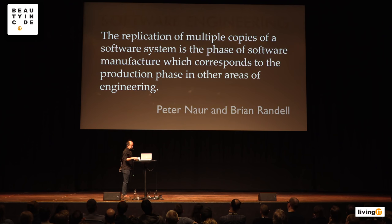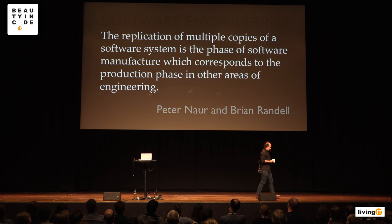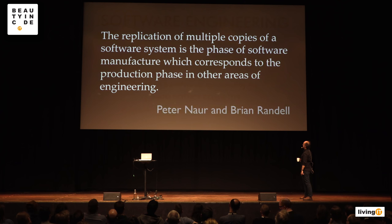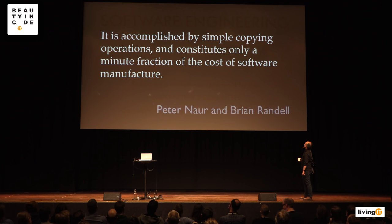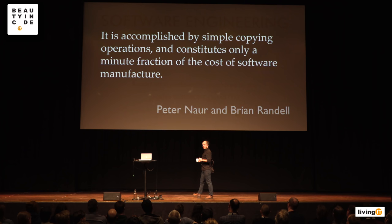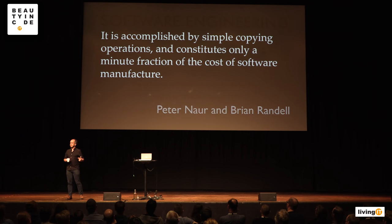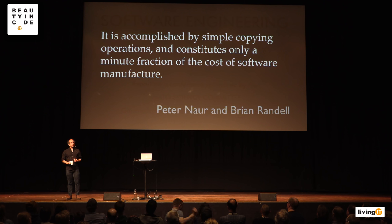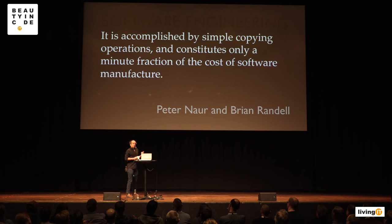Software is not like a manufacturing process. From the 1968 document: 'The replication of multiple copies of a software system is accomplished by simple copying operations and constitutes only a minute fraction of the cost of software manufacture.' I thought this was a new observation when I came across it in the 1990s — until I found it in the original software engineering document. What a programmer does is the manufacturing; compilation and copying are a solved problem. There was explicit recognition of this back then.